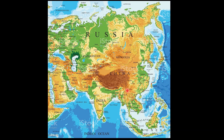Besides this, the mountains in the central and eastern part of Asia restrict the influence of the Pacific Ocean and the Indian Ocean from reaching the interior of the continent. All these mountains are very lofty, so the winds originating from the Pacific Ocean or the Indian Ocean are unable to reach the interiors of the continent.